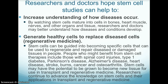Researchers also hope to use stem cells to generate healthy cells to replace diseased cells. Stem cells can be guided into becoming specific cells that can be used to regenerate and repair diseased or damaged tissues. People who might benefit from stem cell therapies include those with spinal cord injuries, type 1 diabetes, Parkinson's disease, Alzheimer's disease, heart disease, stroke, burns, cancer, and osteoarthritis. Stem cells may also have the potential to be grown into new tissue for use in transplant and regenerative medicine.